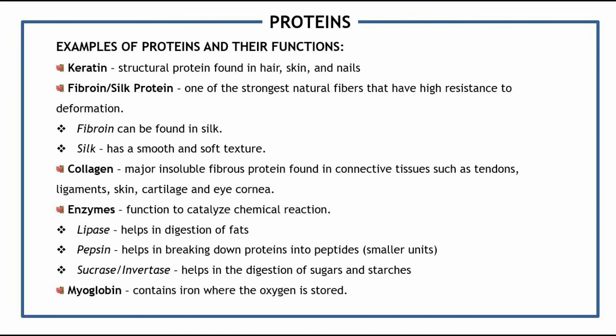Further examples of proteins include keratin, a structural protein found in hair, skin, and nails — meaning it is related to the formation and building of these structures. Fibroin, or silk protein, is one of the strongest natural fibers with high resistance to deformation. Silk has a smooth and soft texture and is a natural protein fiber commonly woven to make textiles; fibroin can be found in silk. Collagen is a major insoluble fibrous protein found in connective tissues such as tendons, ligaments, skin, cartilage, and the eye cornea. Today, collagen is widely used in skin care because it enhances the elasticity of our skin.